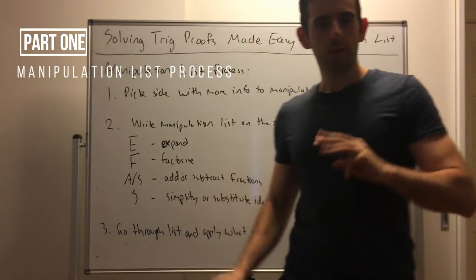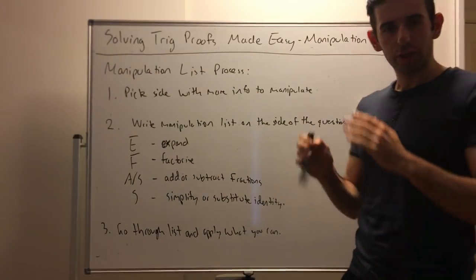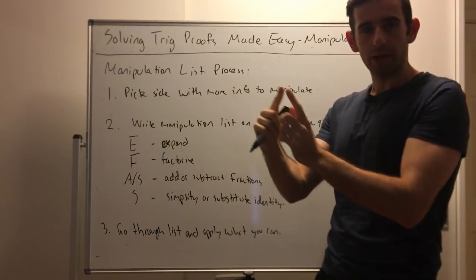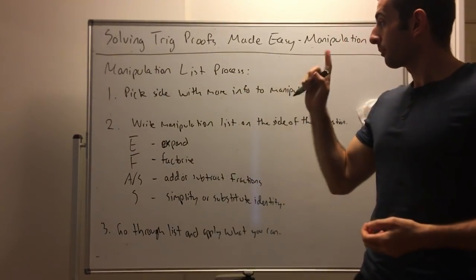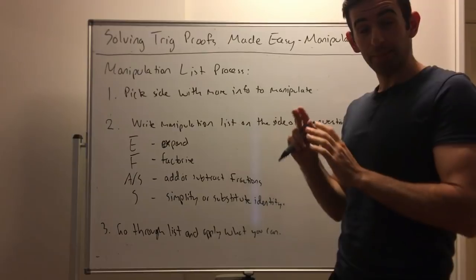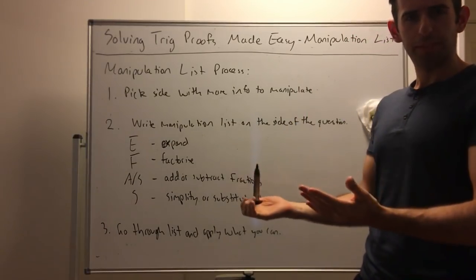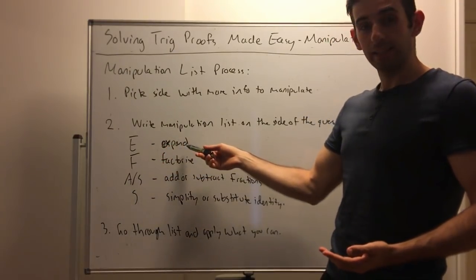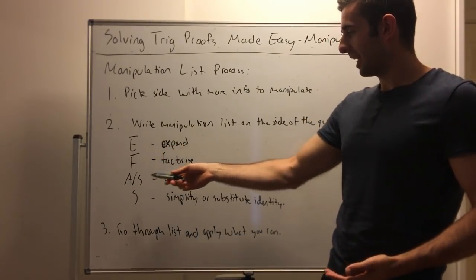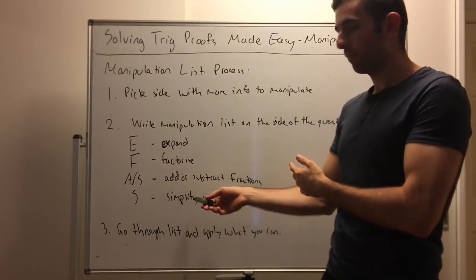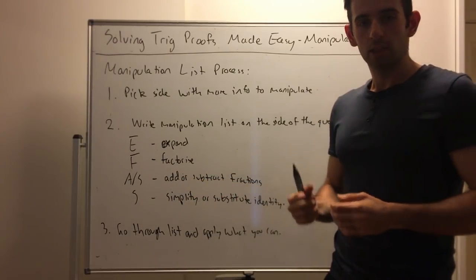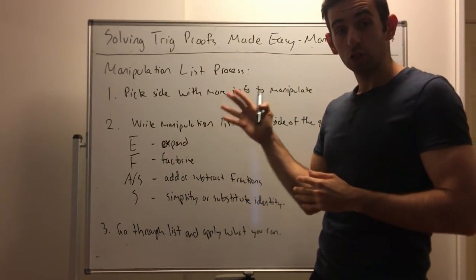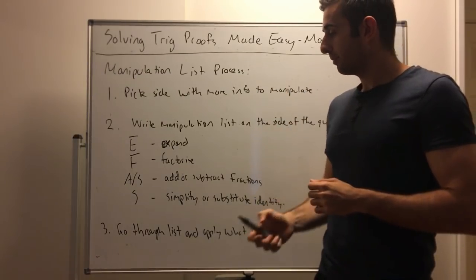So what is this manipulation list and how does it work? Three simple steps. First, you're going to pick the side that has more info to manipulate — left hand or right hand side. Next, write down the manipulation list on the side of the question. The manipulation list is: E, F, A/S, S. E stands for expand, F for factorize, A/S for add or subtract fractions, and S for simplify or substitute identities.